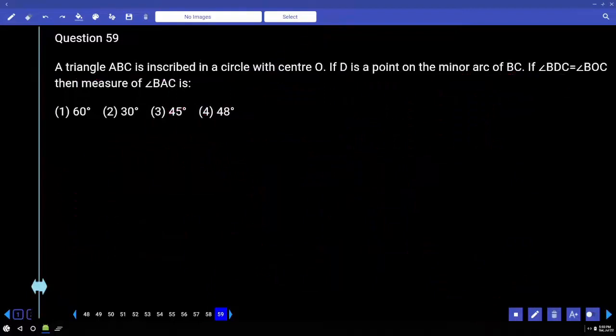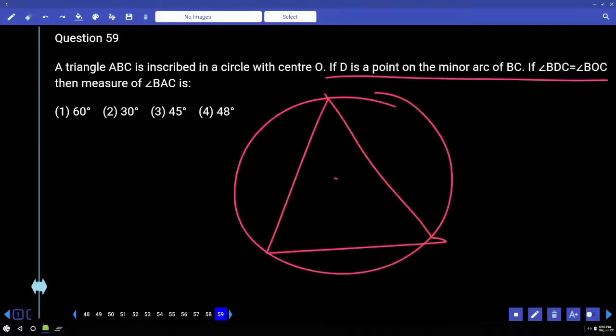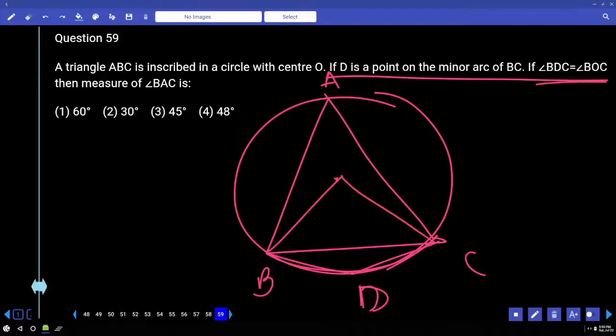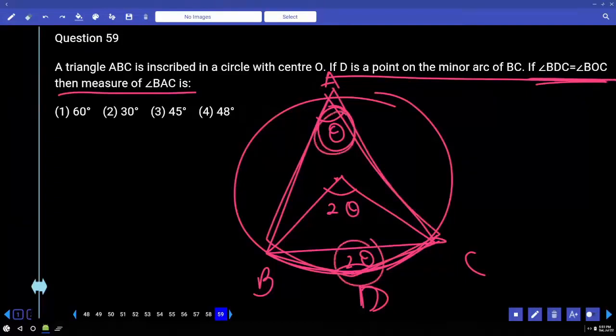Triangle A, B, C is inscribed in a circle with centre O. If D is a point on the minor arc. Angle BDC is equal to BOC. Then the measure of angle BAC. For example, if it is theta, this will be 2 theta. If it is 2 theta, this will be 2 theta because they are equal. Then this is a cyclic quadrilateral in which sum of these two angles will be 180 degrees. 3 theta is 180, theta is equal to 60 degrees. Therefore angle BAC will be 60 degrees option 1.